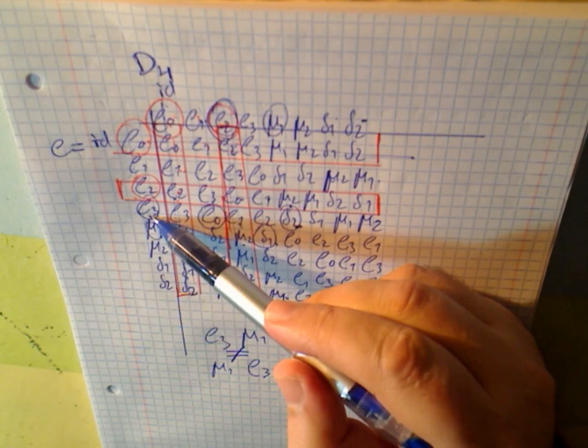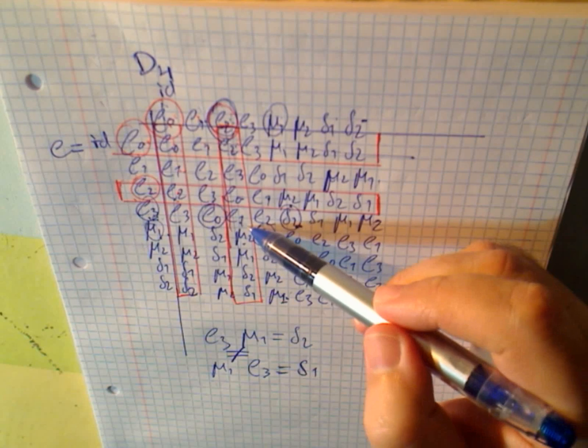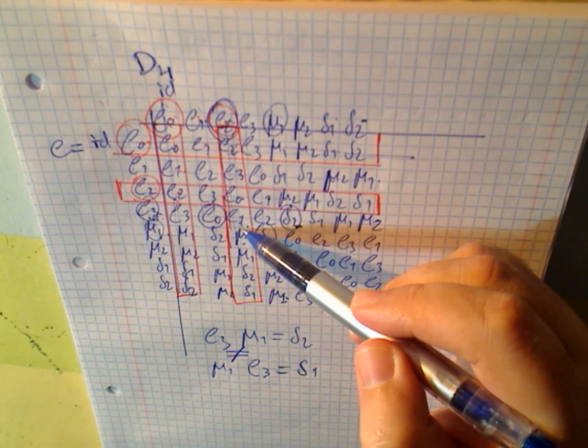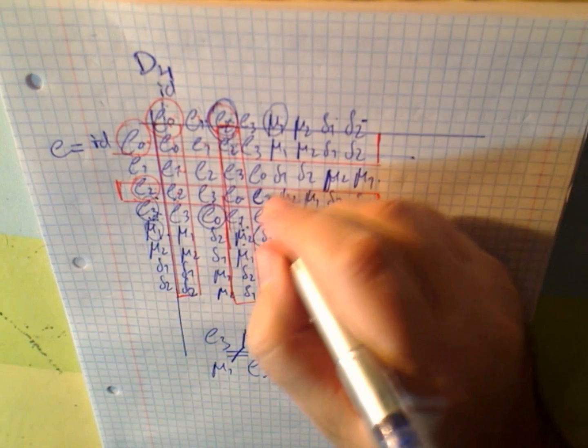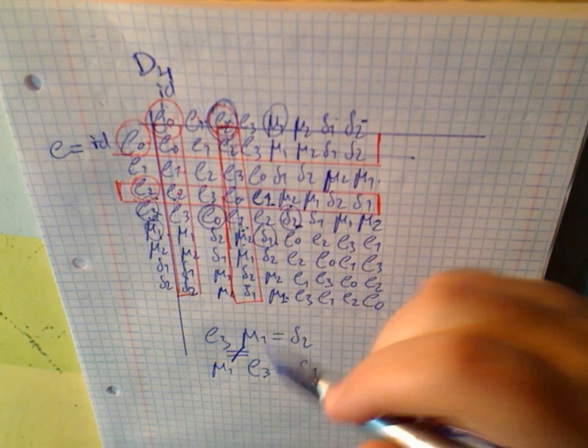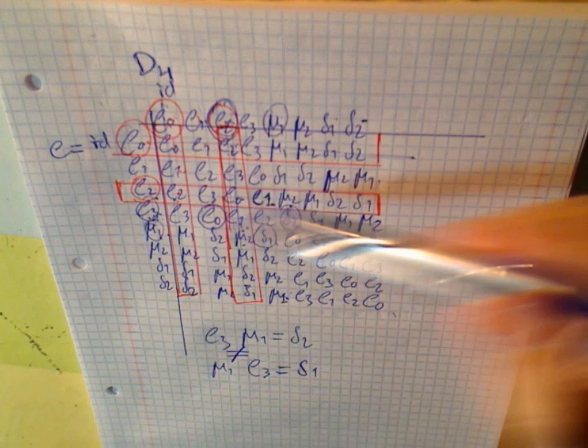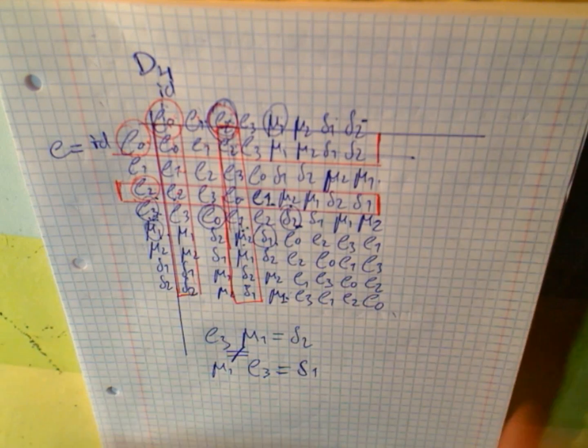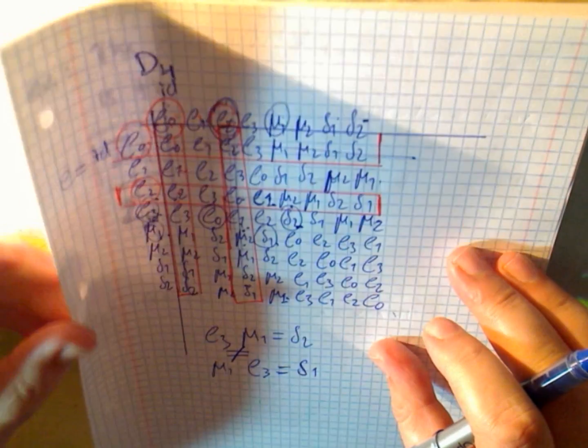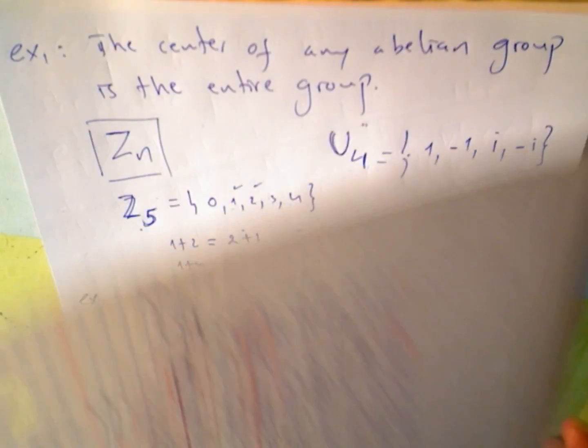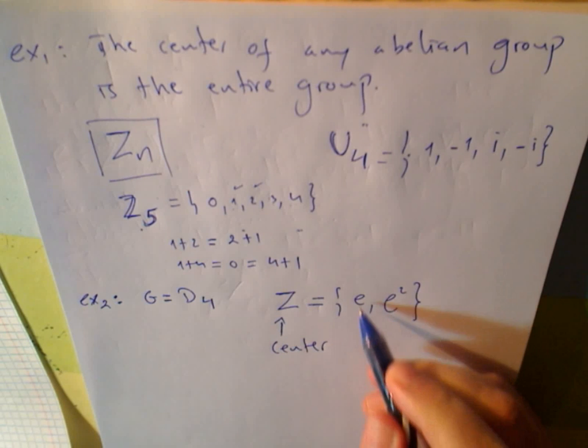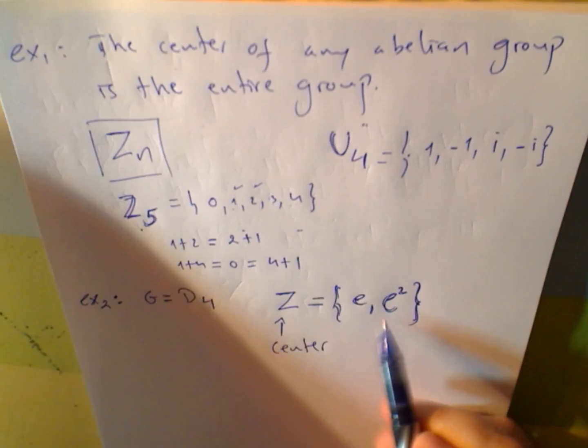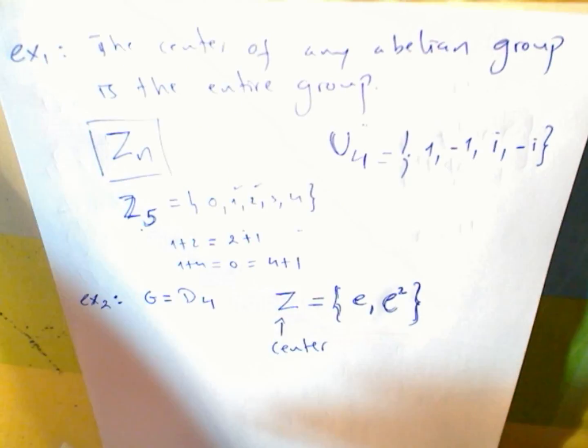So, for instance, rho 3 times rho 2, you get rho 1. And rho 2 times rho 3, you also get rho 1. This element of the set commits to any other element in the set. So, back where we were, the center of D4 is the identity and rho 2. I wrote here rho 2 in a different notation, but I think it's a degree here.